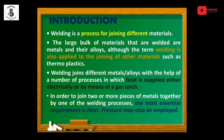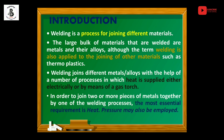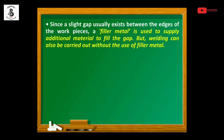In order to join two or more pieces of metals together by a welding process, the most essential requirement is heat. Sometimes pressure may be applied or it may not be applied — that generally depends upon the selection of the metal joining process. Since a slight gap usually exists between the edges of the workpiece, a filler metal is used to supply additional material to fill the gap between the base metal or parent metal.